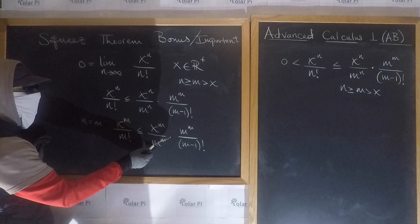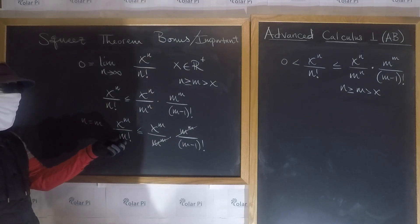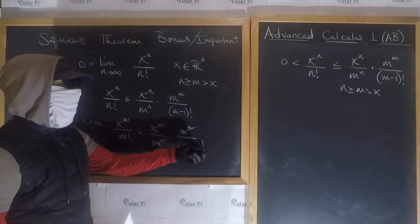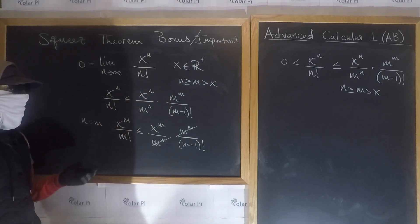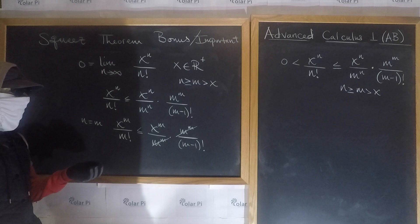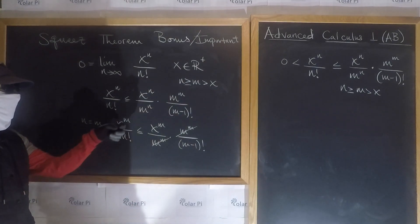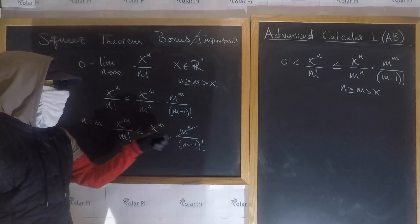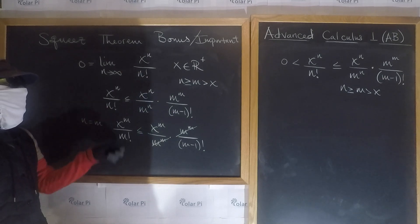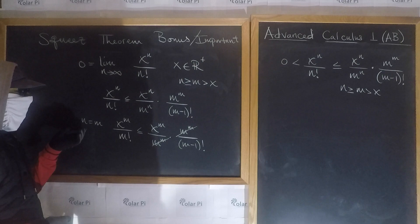We can cancel terms, and what we're comparing is x to the m over m factorial versus x to the m over m minus 1 factorial. The numerators are the same, and therefore whichever has the bigger denominator is smaller. Clearly, m factorial is bigger than m minus 1 factorial, so this quotient has the bigger denominator compared to that quotient. We see that the left-hand side is going to be smaller — so the inequality holds when m and n are equal.